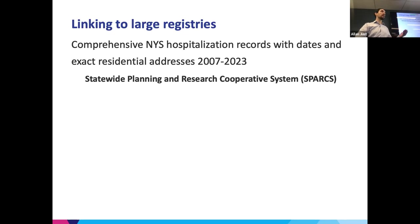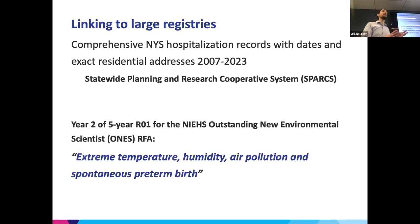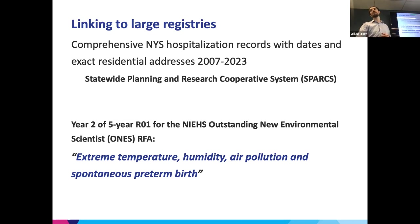Now we're linking to other large registries. The focus of my new R01 proposal is to connect to SPARKS, which is a statewide hospitalization registry. We're going to use our models to connect temperature, humidity, and air pollution with spontaneous preterm birth — thinking about premature rupture of membranes and preterm labor leading to these preterm births. We're able to go back in time in ways you wouldn't be able to with a prospective study, because you'd need to enroll way too many people for an outcome like this.